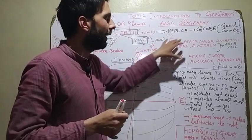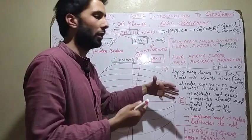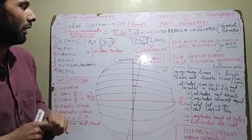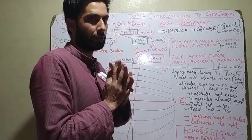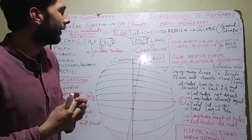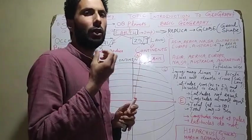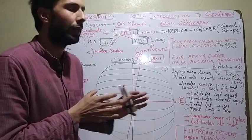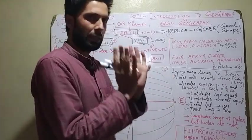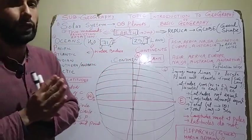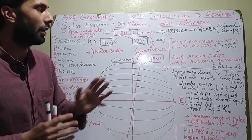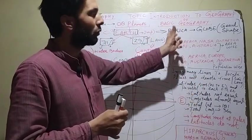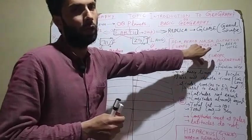Now let's look at the seven continents — area-wise, which is biggest and which is smallest. We have seven continents: Asia, Africa, North America, South America, Antarctica, Australia, and Europe. First, let's rank them area-wise. I'm writing them in descending order — largest first, then smaller, then even smaller, down to the smallest.